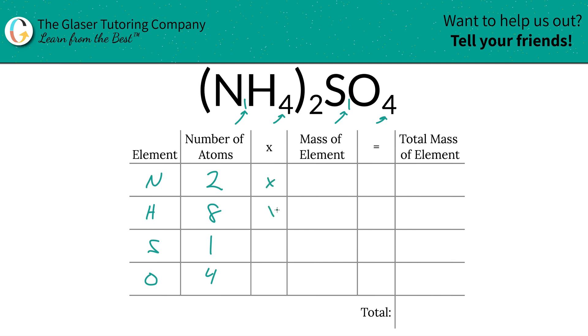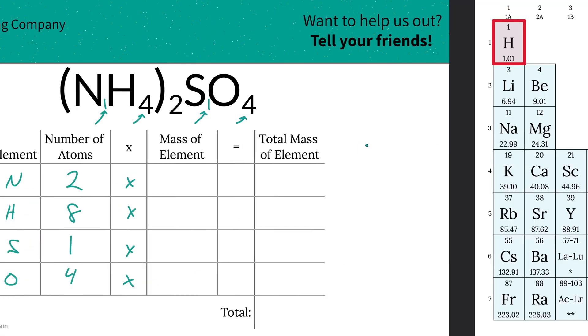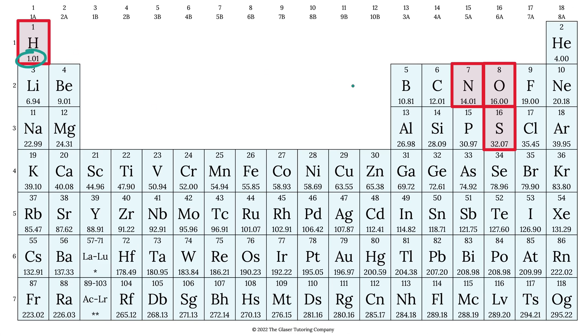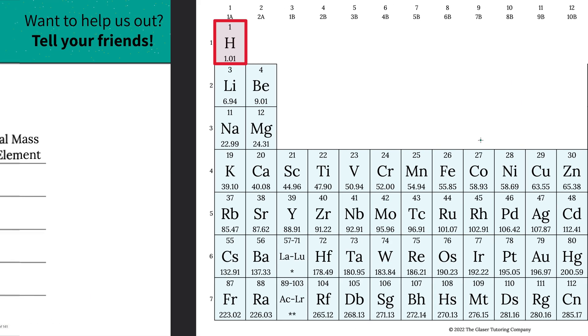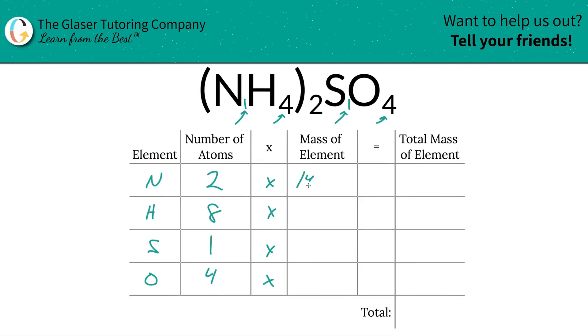Then you're going to take those numbers of atoms and multiply it by the mass of each element—that's where the periodic table comes into play. Hydrogen's mass is 1.01, nitrogen is 14.01, oxygen is 16, and sulfur is 32.07.